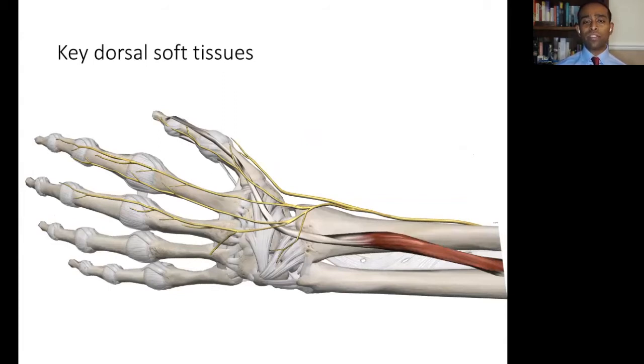Extensor pollicis longus tendon can be seen here within the third extensor compartment, winding around Lister's tubercle before inserting into the thumb. As much of it is surrounded by bone at this point, it is vulnerable to attritional rupture and loss of function following a distal radius fracture.